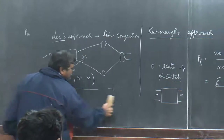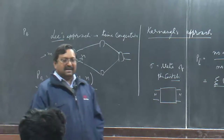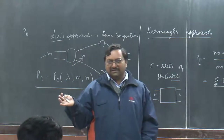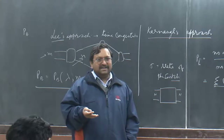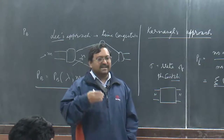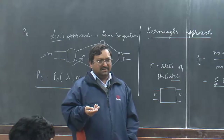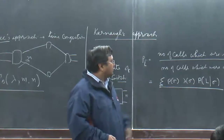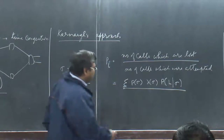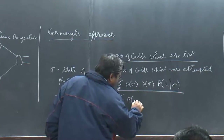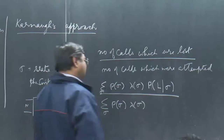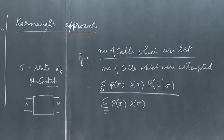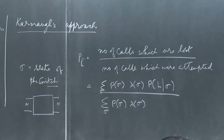State transitions happen whenever a call goes off, whenever a call arrives, and whenever reorganization happens — there can be multiple state transitions during rearrangements. So call loss equals the numerator expression divided by the total number of calls attempted. This gives the blocking probability, or call loss probability. We have to find this — now the question is how to interpret sigma and find a state variable that is finite and easily solvable.